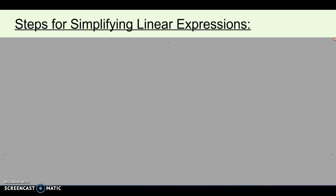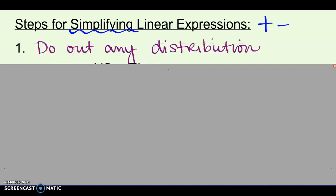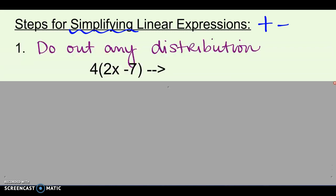Here are the steps to follow every time we want to simplify linear expressions. When we say simplify, we're adding and subtracting all the like terms together. Step 1: do out any distribution — distribute anything outside of parentheses to everything inside and rewrite it. For example, 4 times 2x is 8x, and 4 times negative 7 is negative 28. Then rewrite it to get rid of the parentheses.